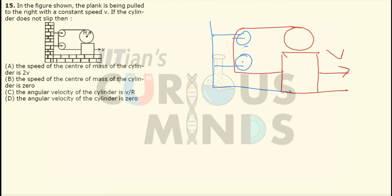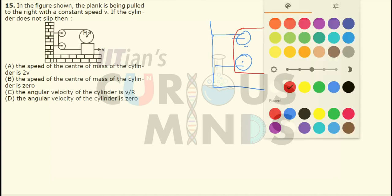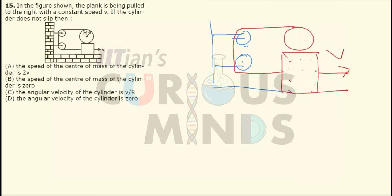If this block is performing translational motion, any point on the block will have the velocity V. Any point in contact with the block will also have the velocity V — it means that the bottom-most point will also have a velocity V.